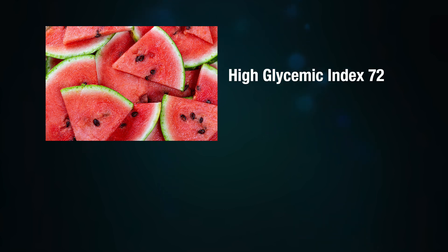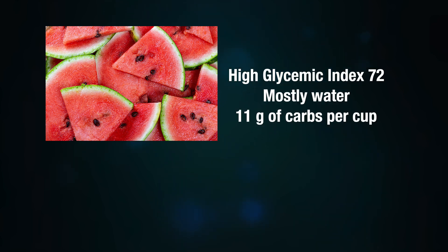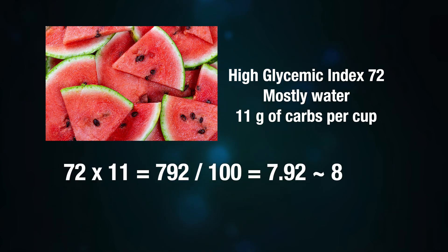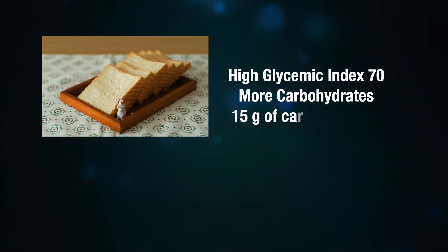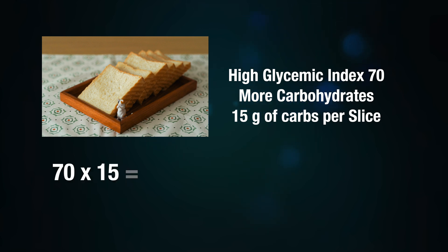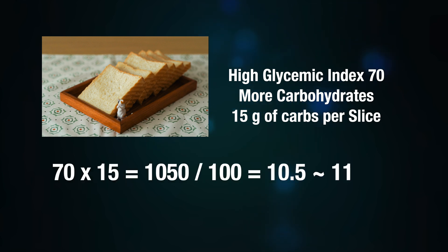For example, watermelon has a high glycemic index of 72, but it is mostly water and has very few carbohydrates — about 11 grams per cup — giving it a low glycemic load of about 8. On the other hand, a slice of white bread has a glycemic index of 70 but contains more carbohydrates, about 15 grams per slice, giving it a higher glycemic load of about 11.